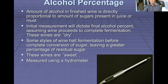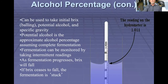Some styles of wine, however, halt the fermentation before there is a complete conversion of sugar, leaving a greater percentage of residual sugar. These wines are known as sweet wines. We can take the initial BRIX measurement with the hydrometer and estimate the potential alcohol and/or specific gravity. Fermentation can be monitored by taking intermittent readings over several days and monitoring how quickly the values decrease. As fermentation progresses, the BRIX will fall. If the BRIX ceases to fall, then we say the fermentation is stuck.